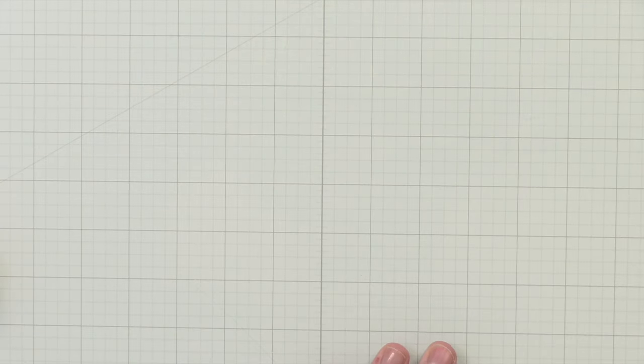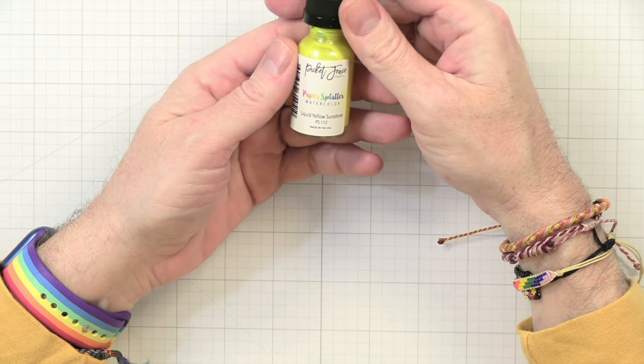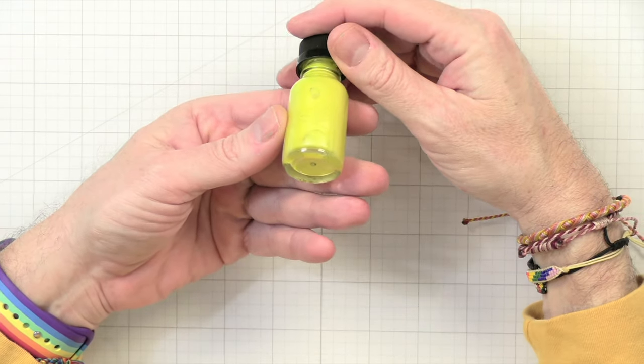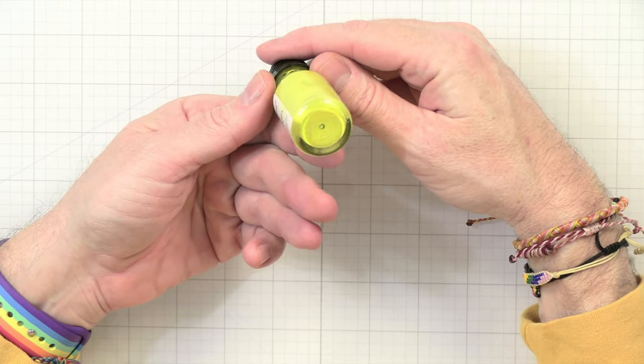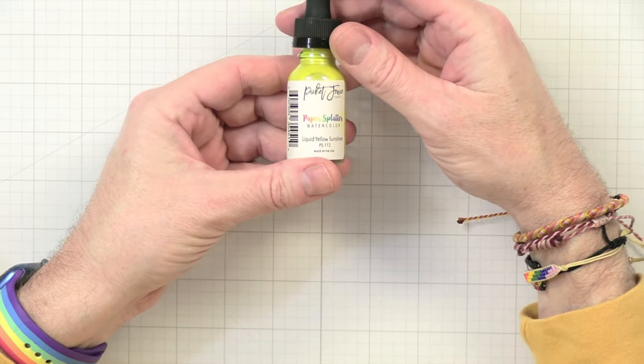Alright, we're coming towards the end. We have a new watercolor splatter paper splatter. This is Liquid Yellow Sunshine. I think the name pretty much tells you what it is. It's really really bright and yellow. Really nice.